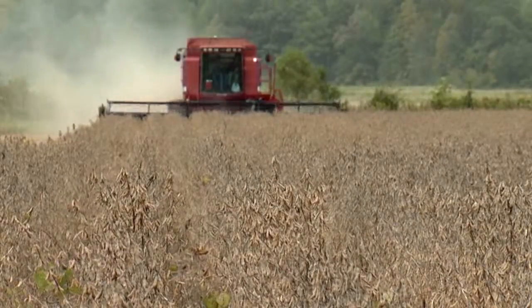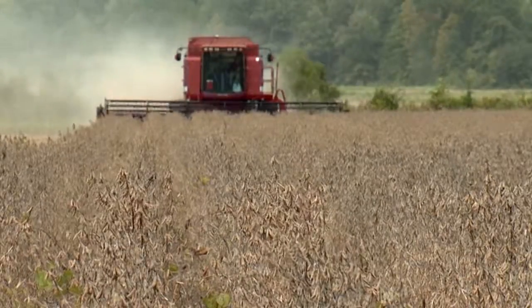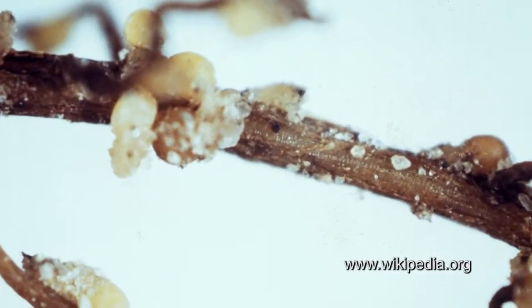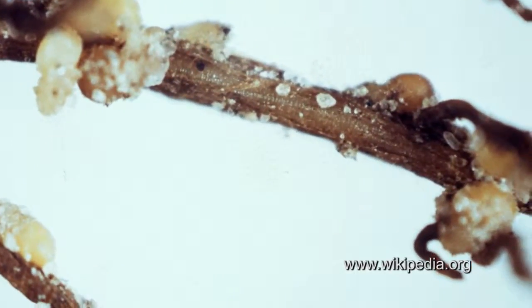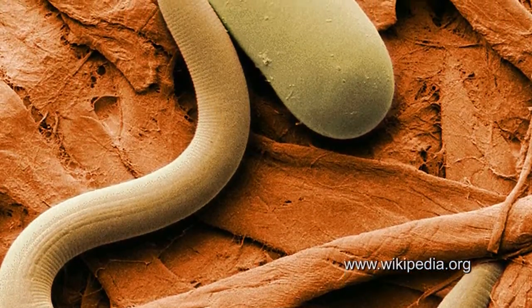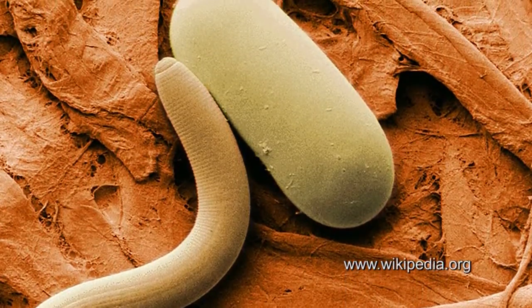One of the numerous problems that soybean growers face is the infestation of soybeans by parasitic nematodes that can stunt the plant's growth and reduce yield and seed quality. This parasitic roundworm, and particularly the soybean cyst nematode, is a major pest in Mississippi soybeans.